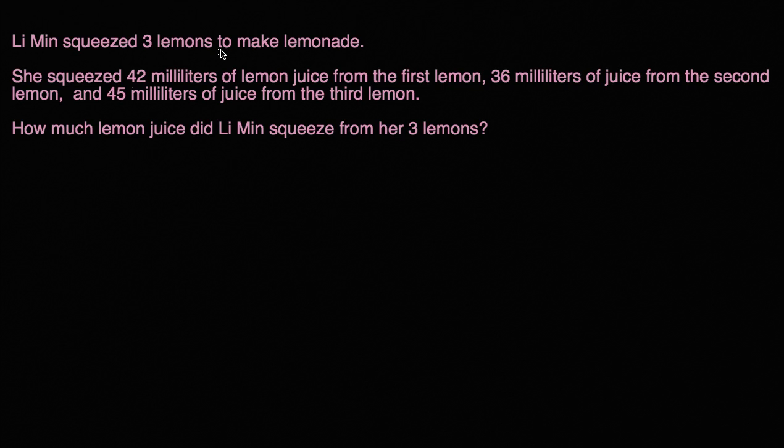Li Min squeezed three lemons to make lemonade. She squeezed 42 milliliters of lemon juice from the first lemon, 36 milliliters of juice from the second lemon, and 45 milliliters of juice from the third lemon. How much lemon juice did Li Min squeeze from her three lemons?